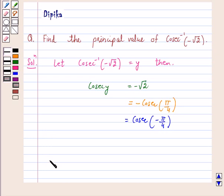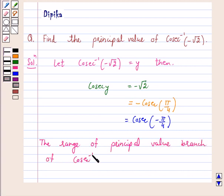Now, from the key idea, the range of the principal value branch of cosecant inverse is closed interval minus pi by 2 to pi by 2, excluding 0.